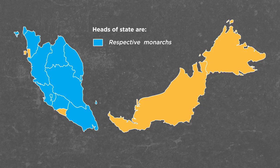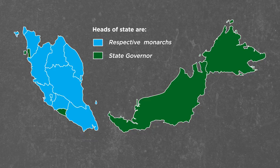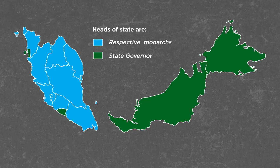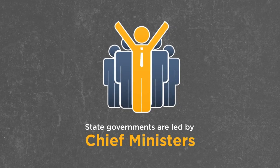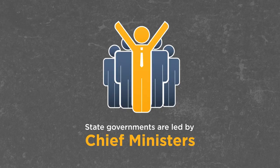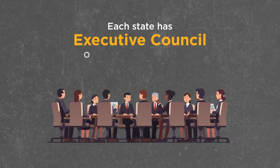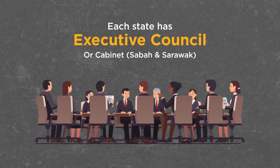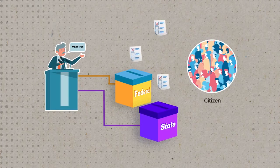However, the heads of state for the states of Pulau Pinang, Melaka, Sabah, and Sarawak are their respective Yang Di-Pertuan Negeri, which is interchangeably addressed as the state governor. The state governments themselves are led by chief ministers who come from the majority party in their respective state assemblies. Each state also has its own executive council, or cabinet in the case of Sabah and Sarawak, that are answerable to their state assemblies.